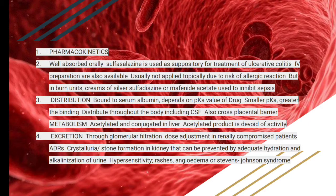Distribution: sulfonamides are bound to serum albumin, depending upon the pKa value — the smaller the pKa, the greater the binding. They are distributed throughout the body including the CSF because they cross the blood-brain barrier, and they also cross the placenta so they are contraindicated in pregnancy. Metabolism: they are acetylated and conjugated in the liver; the acetylated product is devoid of activity. Excretion is through the kidney via glomerular filtration, so dose adjustment is required.